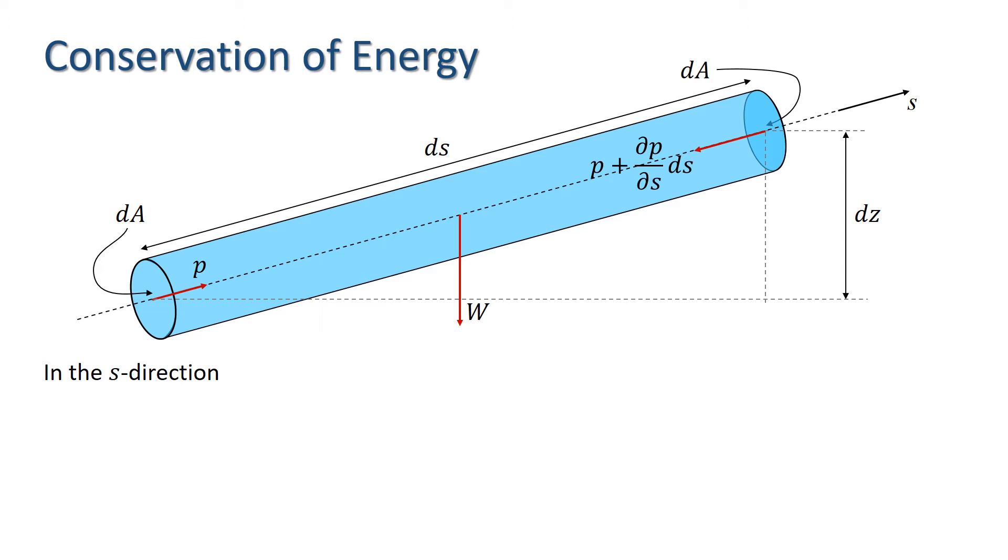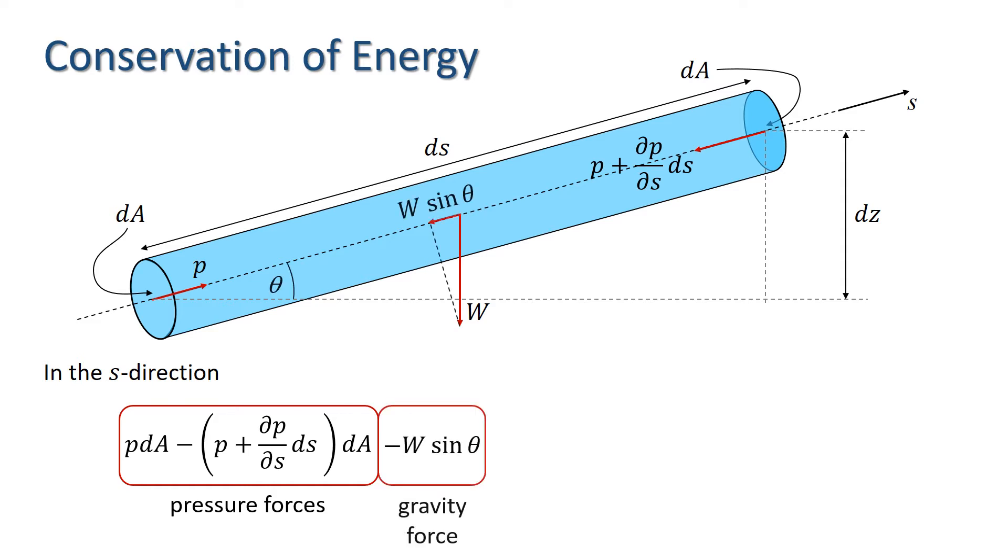If we look at the forces in the flow direction S, we have pressure forces, which are the pressures times the area dA, and of course we must take account of direction, hence the second term is negative. And we have the component of the gravity force in the S direction, which is minus W sine theta, where theta is the angle between the S axis and the horizontal.